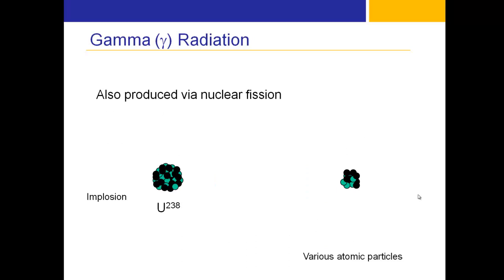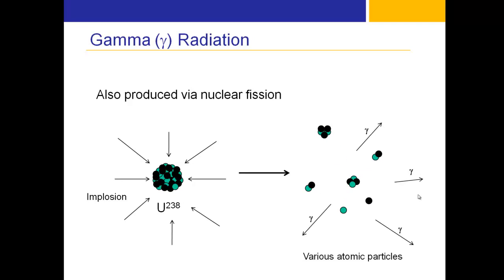Gamma radiation is produced via nuclear fission. In nuclear fission you have an implosion reaction — uranium-238 undergoes uniform compression inward from external explosive sources, compressed to a pinpoint. As it returns to its normal state, it flies to pieces and gamma rays are emitted along with the various atomic particles generated by the fission.